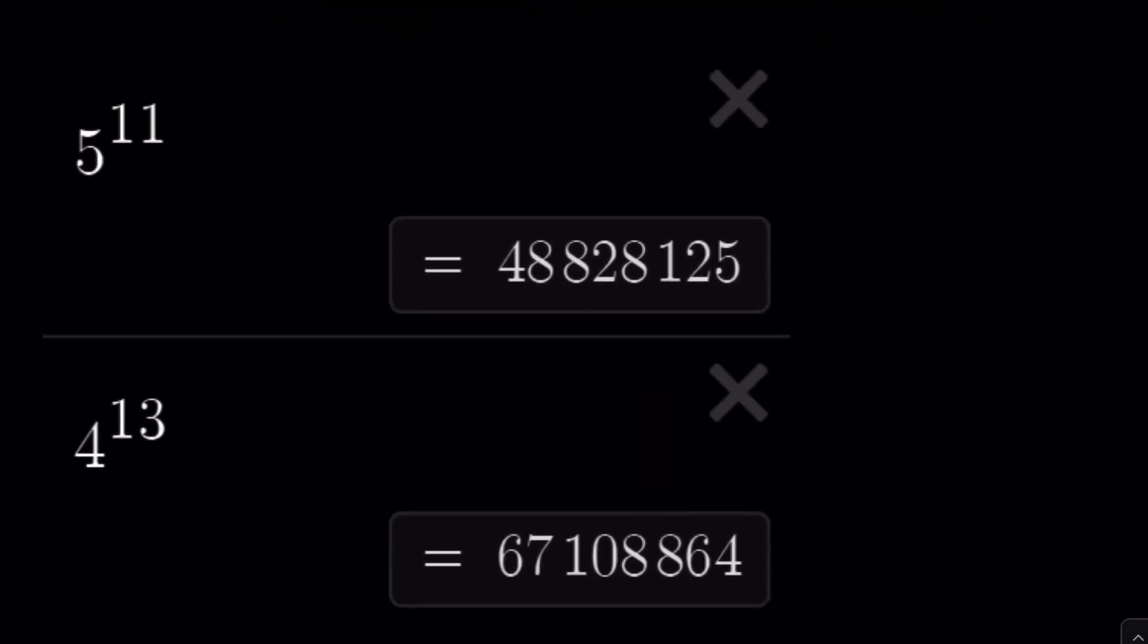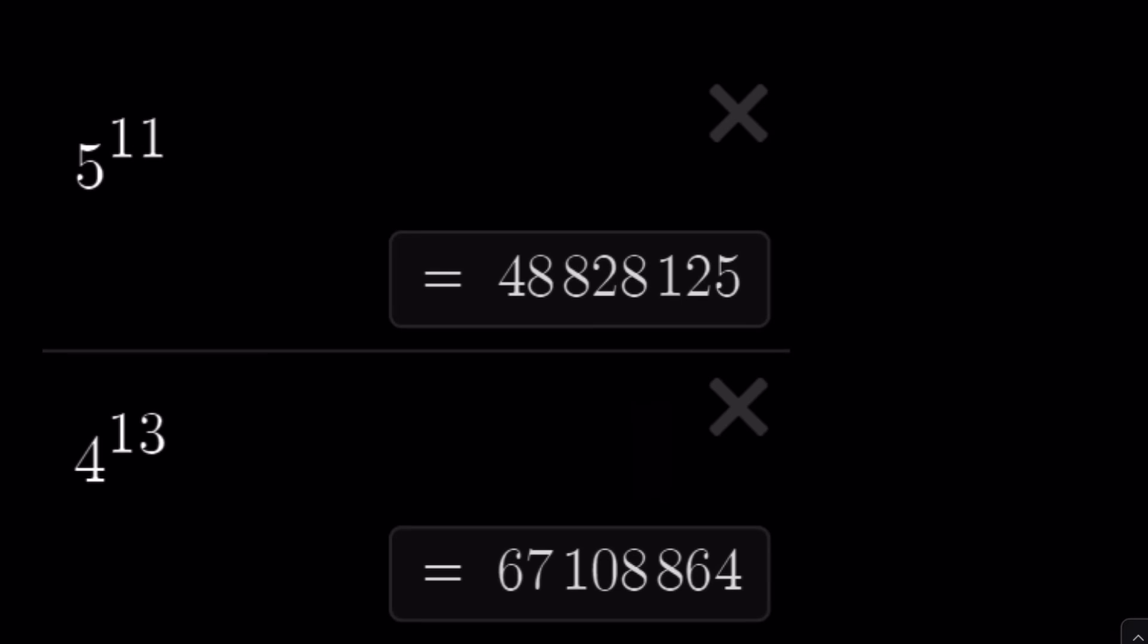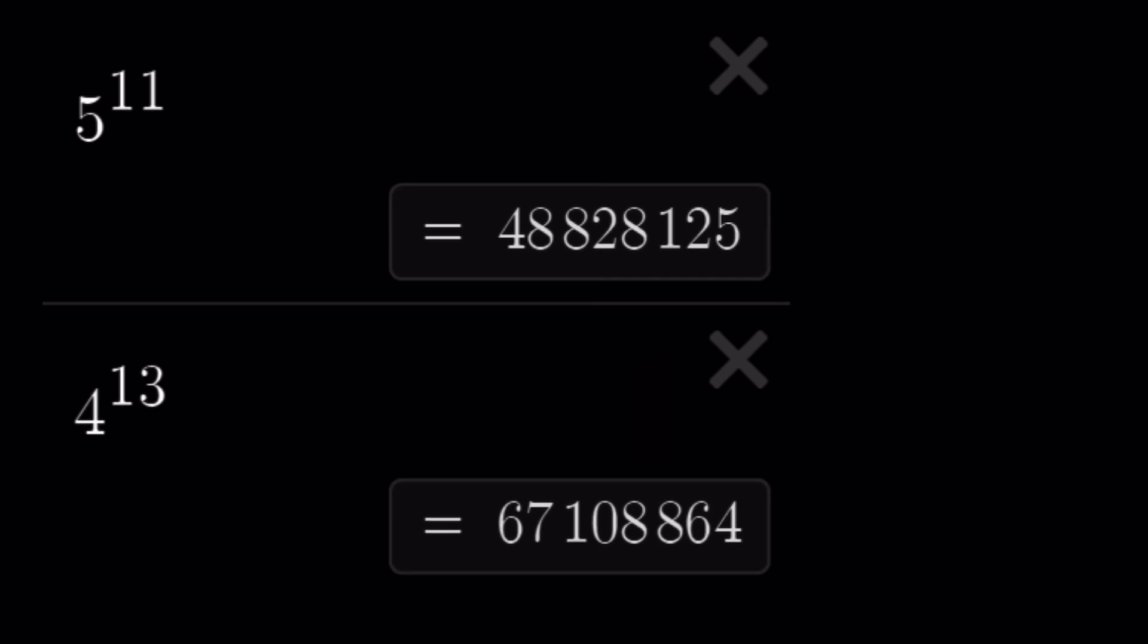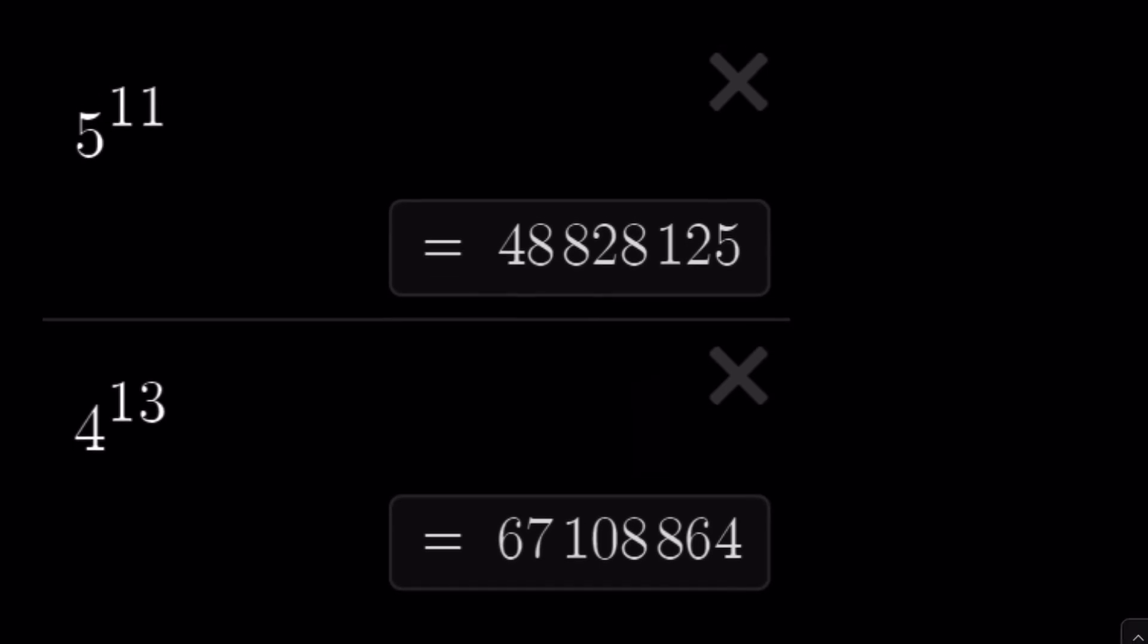Let's look at the numerical values. 5 to the power 11 is 48 million 828 thousand 125, and 4 to the power 13 which is the same as 2 to the power 26 is 67 million something. Our winner again is 4 to the power 13. This brings us to the end of this video. Thank you for watching. I hope you enjoyed it. Don't forget to comment, like and subscribe. I'll see you next time. Until then be safe, take care and bye bye.